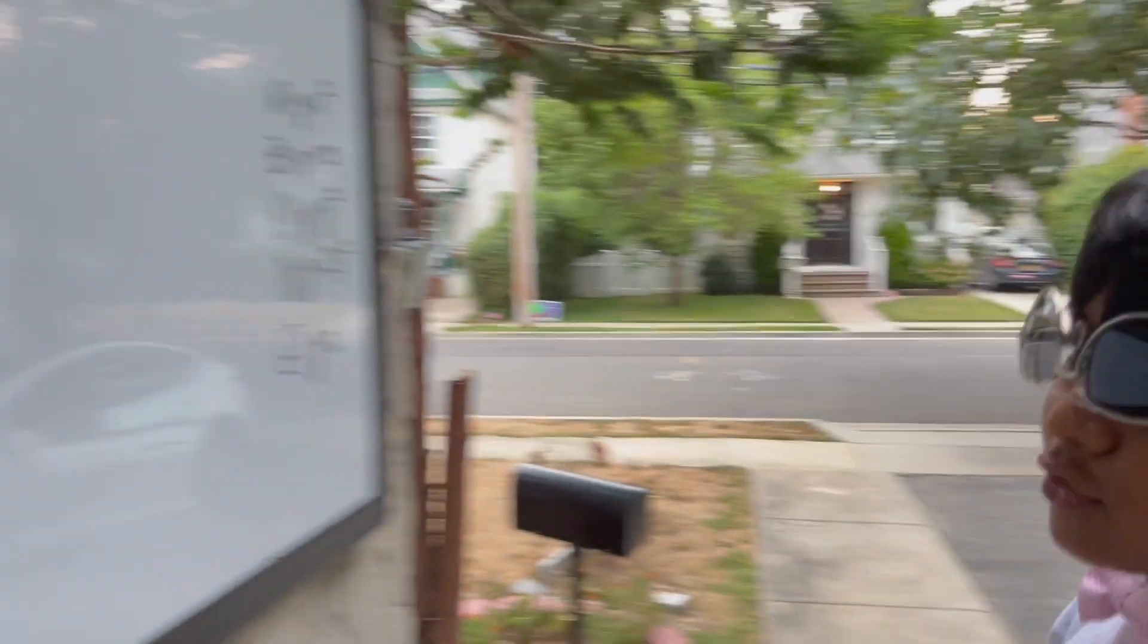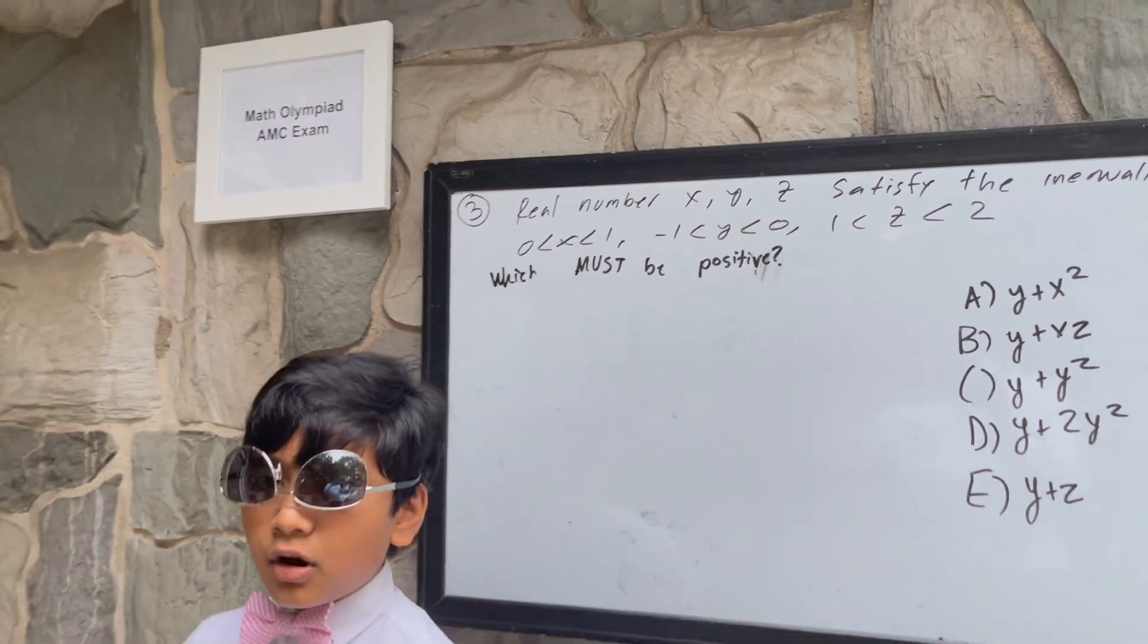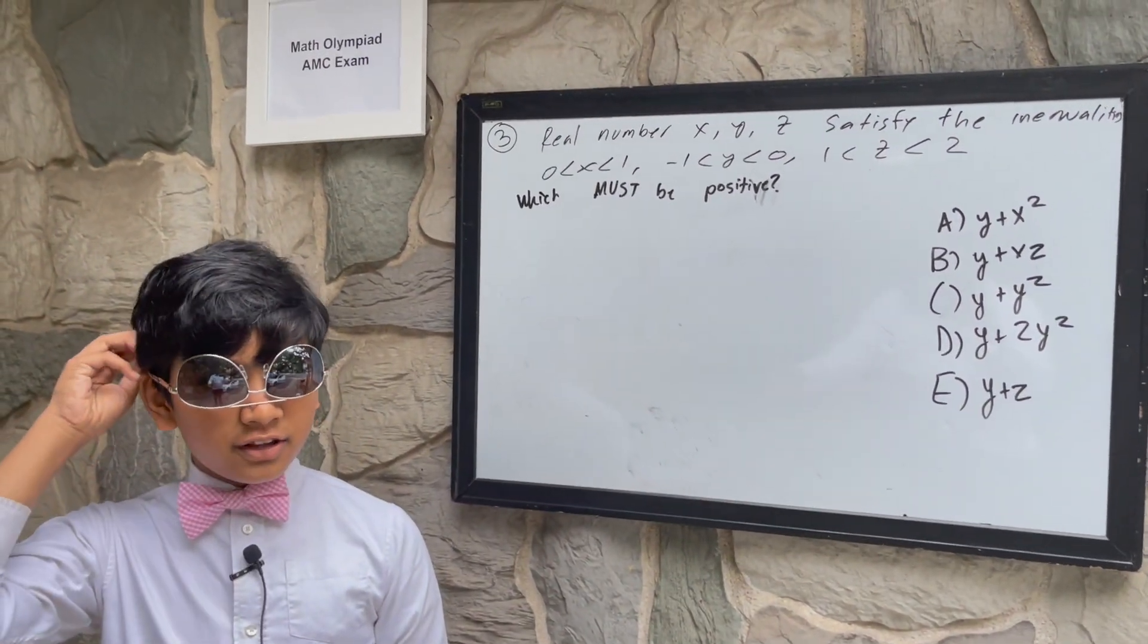Real numbers x, y, and z satisfy the inequality: 0 is less than x, which is less than 1; negative 1 is less than y, which is less than 0; and 1 is less than z, which is less than 2.